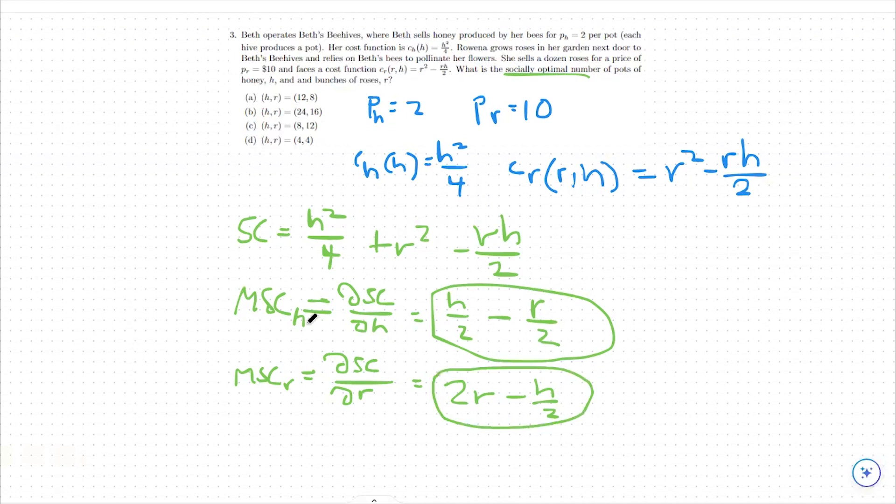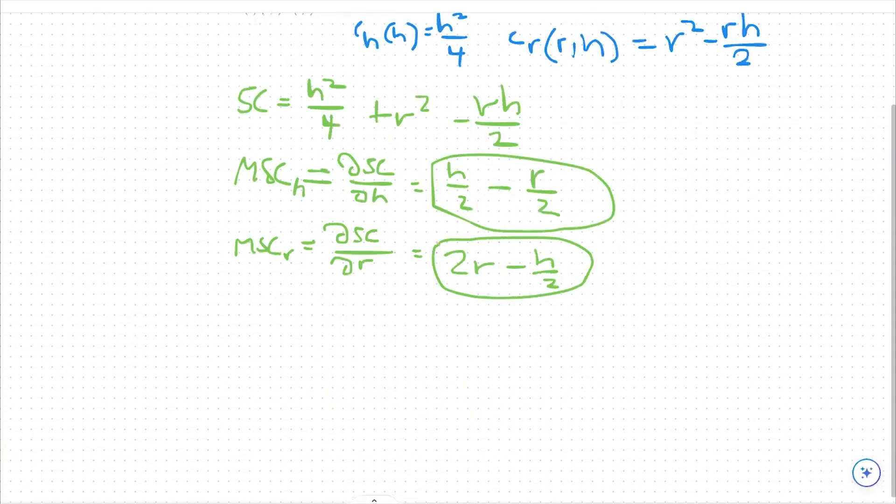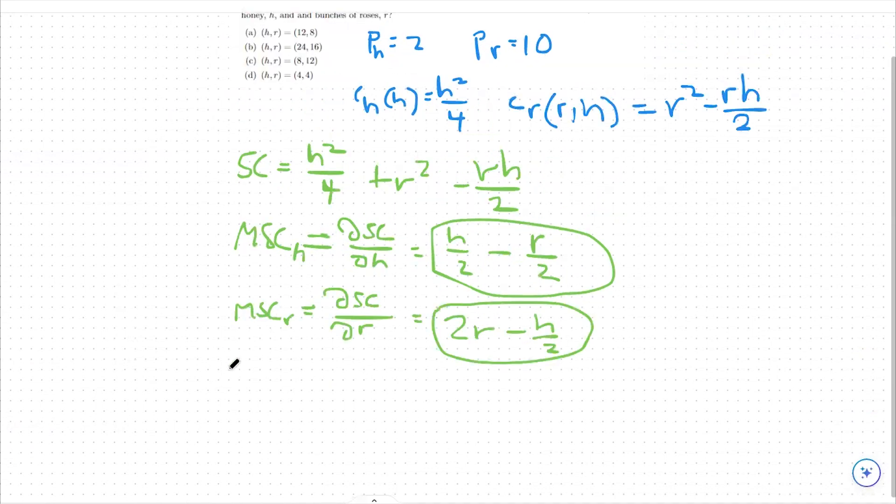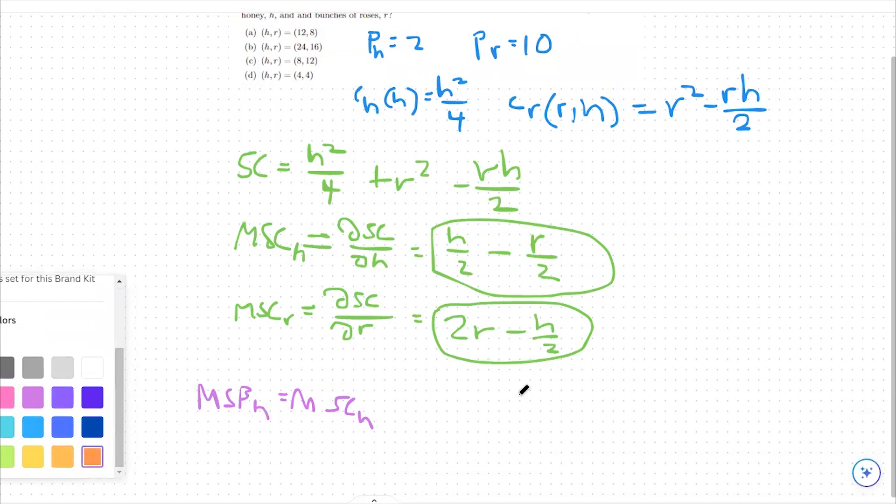Okay. So we have our two marginal social costs. From there, we need to do another two sets of equations. What we need to do is essentially put in place our marginal social benefit for honey equal to our marginal social cost for honey. And then the same thing for our other good, our roses. We need our marginal social benefit to roses to equate to our marginal social cost to roses. And this is going to be our optimizing condition.